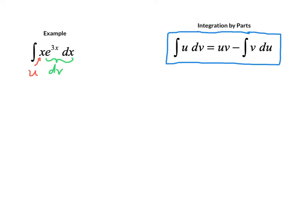Now, the guidelines for dv are that it should be the more complicated factor that has an elementary integration rule. So in this case, we know how to integrate both x and e to the 3x, but the one that's slightly more difficult is e to the 3x, so this fits all the guidelines that are out there for picking the right choice of u and dv.